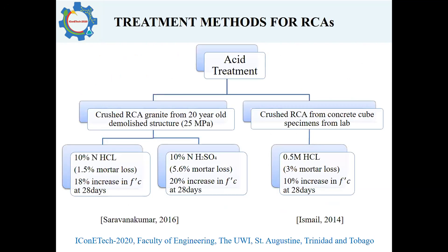Treatment methods for recycled concrete aggregates. Several treatment methods can improve the properties of recycled concrete aggregates. One of which was acid treatment. Crushed recycled concrete aggregates from a 20-year-old demolished structure were soaked in hydrochloric acid and sulfuric acid, which gave an increase in the compressive strength when used to form recycled aggregate concrete. There was an 18% and 20% increase for the hydrochloric acid and sulfuric acid treated specimens respectively, as compared to natural aggregate concrete specimens at 28 days. The acid removes part of the attached mortar, which decreases the water absorption, hence showing improvements in compressive strength.